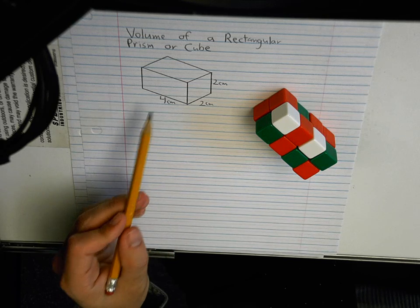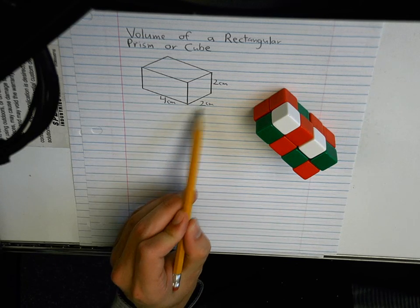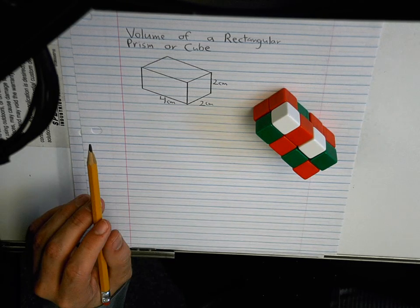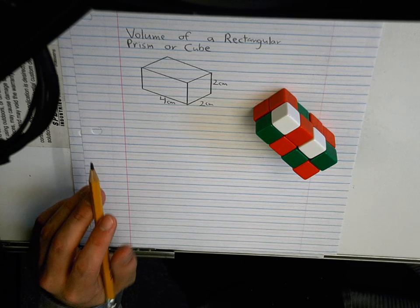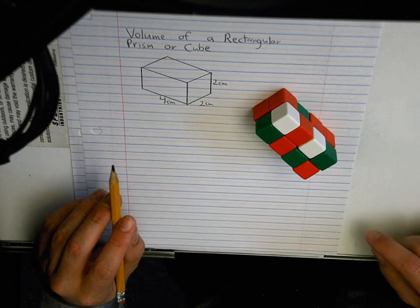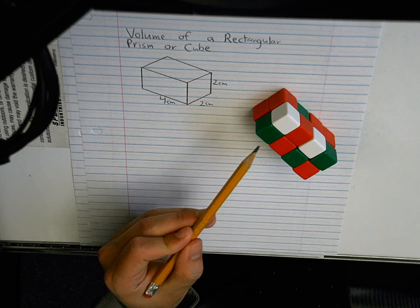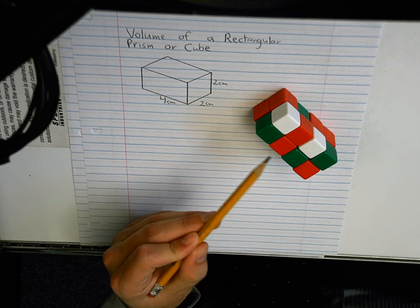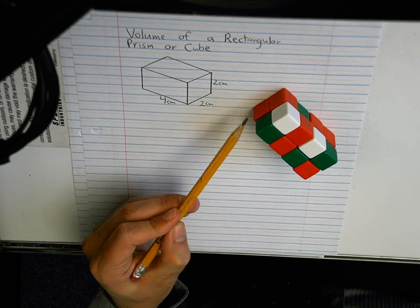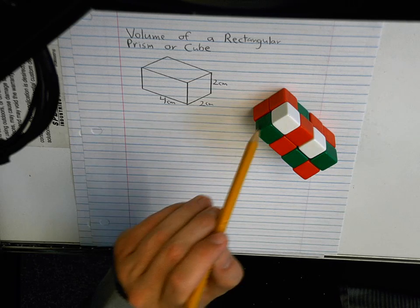So I set up and I measure this as four centimeters, two centimeters, and two centimeters. Then I figured I was going to construct it with cubes. Cubes about a centimeter, a little different, a little bigger. Let's see how we have four going this way, two going up and down, and two going this way.